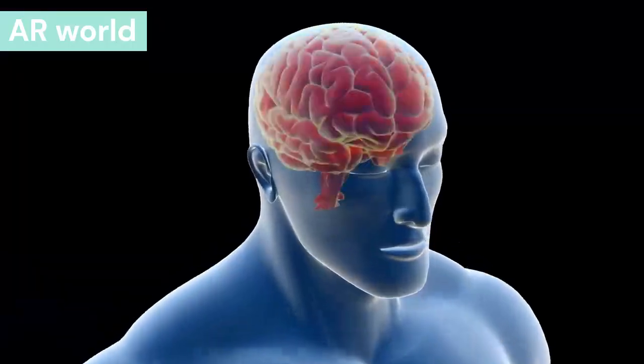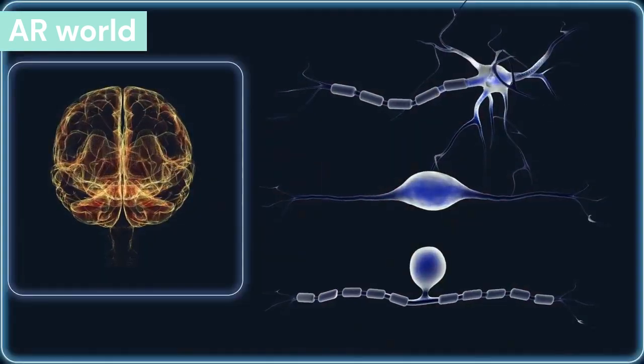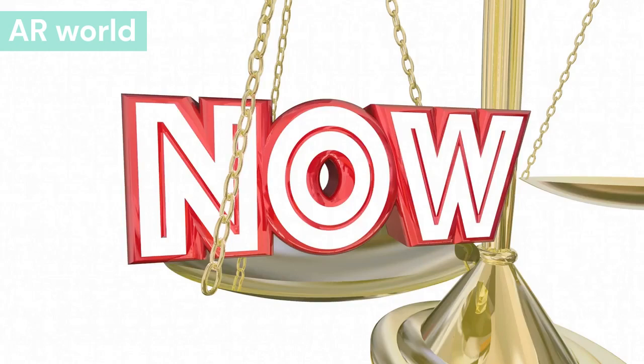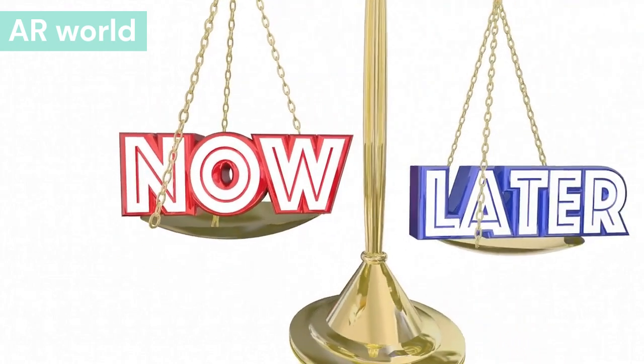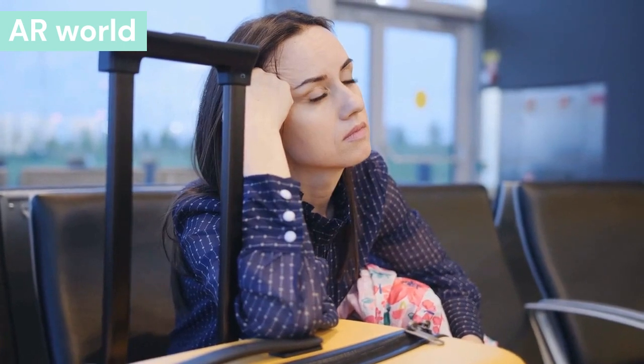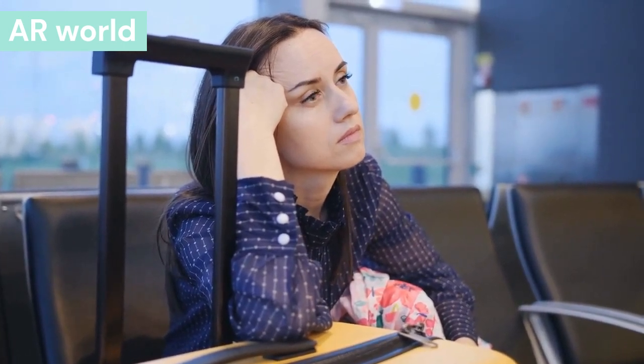In today's video, you will know the answers to all the questions like what is an earthquake, why earthquakes occur and how many types are there. So let's go ahead without any delay and know the complete information. When the earth's surface starts shaking or vibration is produced, it is called an earthquake.